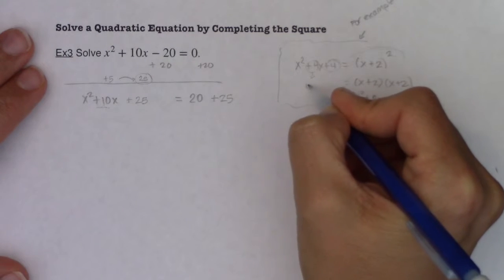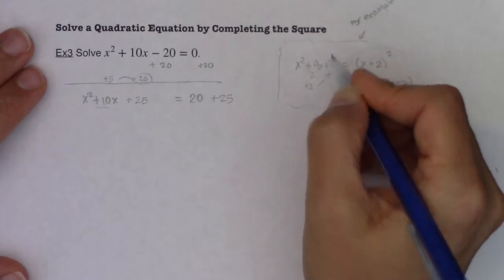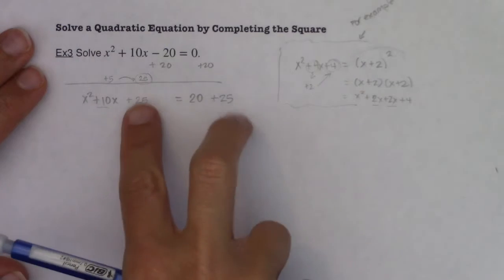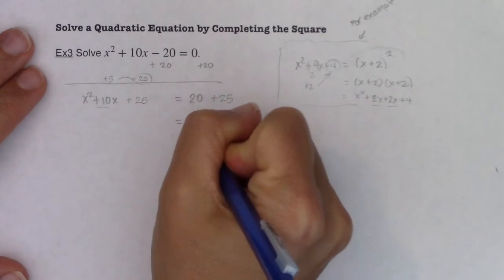And you can see the same thing working here. What is half of 4? Positive 2. What is positive 2 squared? Positive 4. So whatever that squared term is, add it to both sides, all right? So I think you'll give me that the right side is equal to 45.